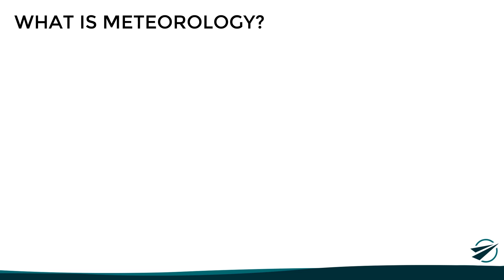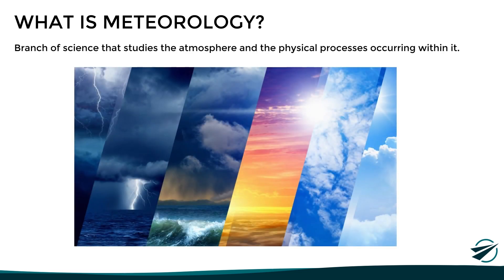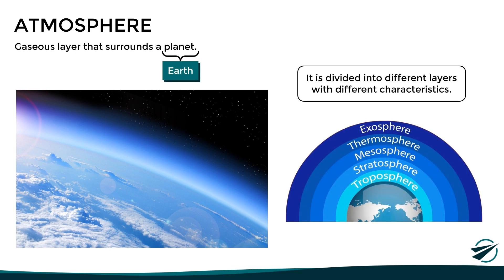First of all, let's define what meteorology is. Meteorology is the branch of science that studies the atmosphere and all the physical processes occurring within it. The term atmosphere refers to a gaseous layer that surrounds a planet — in this case, the Earth. The Earth's atmosphere is divided into different layers, each with different pressure, humidity, density, and temperature characteristics. We will look at these layers in more detail in a future video.